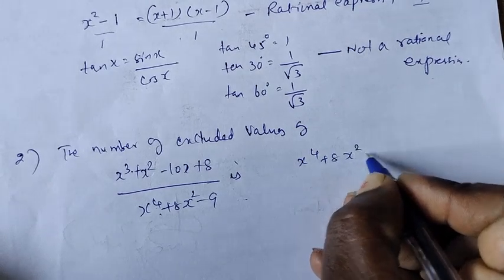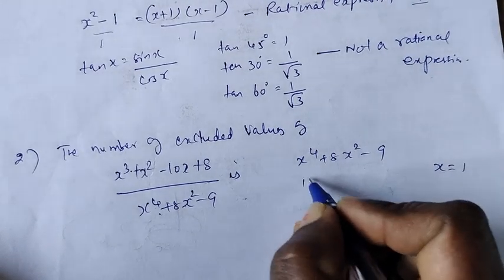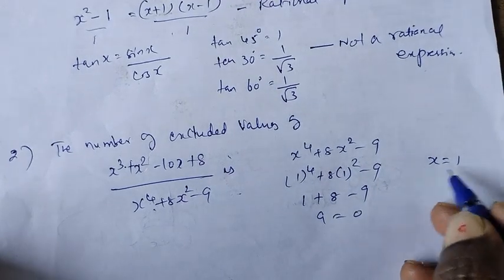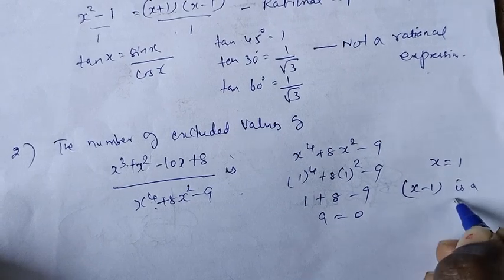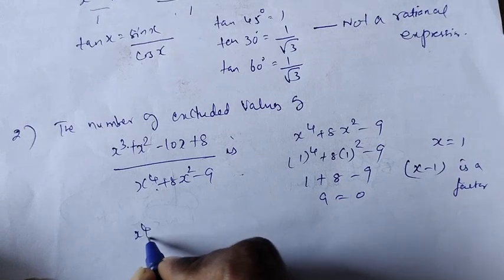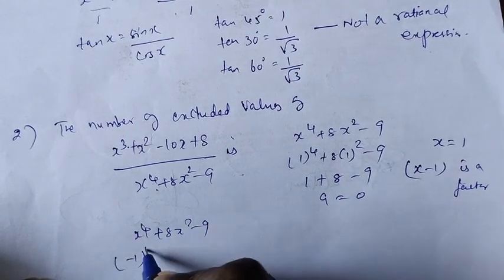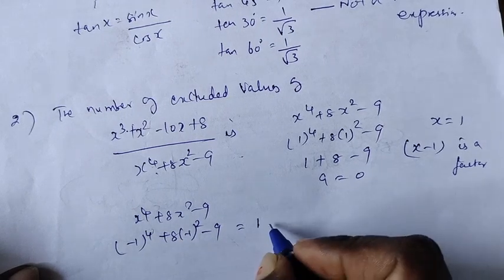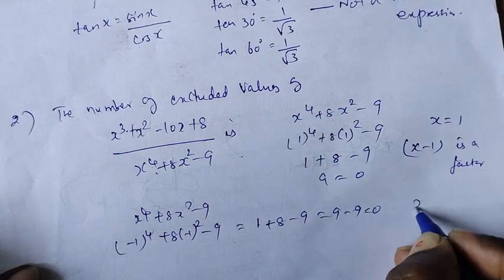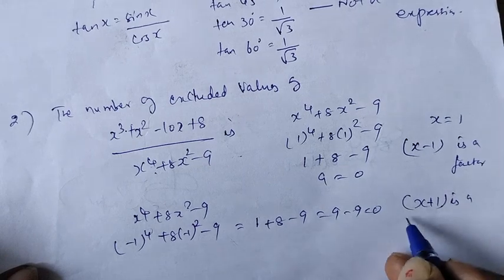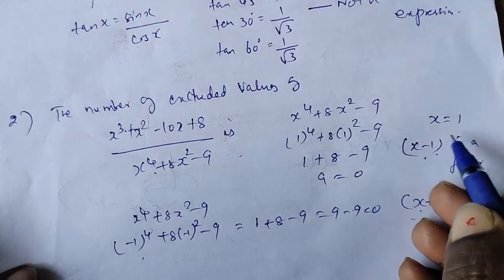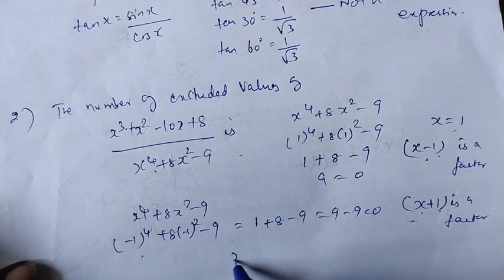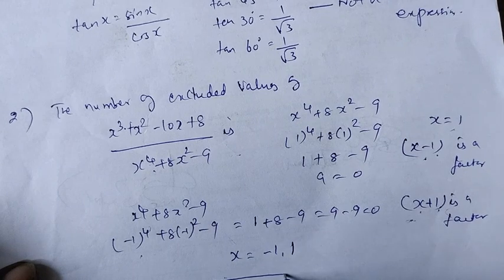For x power 4 plus 8x squared minus 9: substitute x equal to 1 — 1 power 4 plus 8 into 1 squared minus 9 equals 1 plus 8 minus 9 equals 0. So x minus 1 is a factor. Substitute x equal to minus 1 — minus 1 power 4 plus 8 into minus 1 squared minus 9 equals 1 plus 8 minus 9 equals 0. So x plus 1 is also a factor.